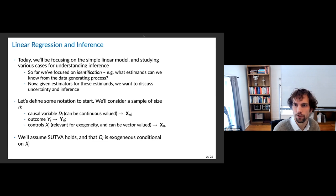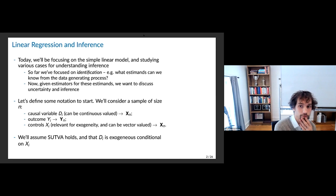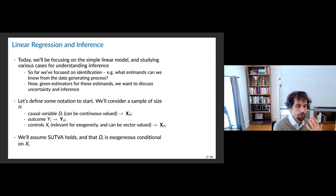What we're going to be talking about today is — we've been doing a lot on identification. The first four classes were really trying to emphasize this idea of what kinds of estimands could we know given the data generating process. What I want to talk about today, although obviously the idea of what estimands you're using is going to matter, is sort of: given an estimator for these estimands, I want to talk about uncertainty and inference.